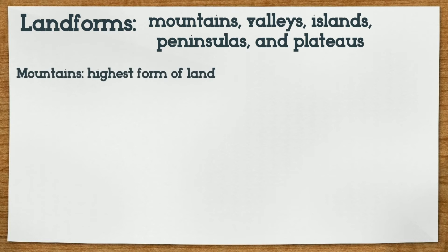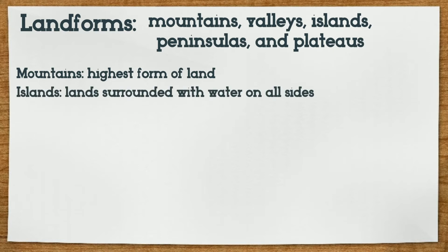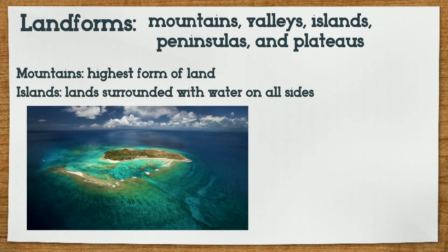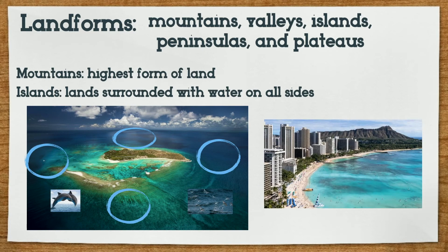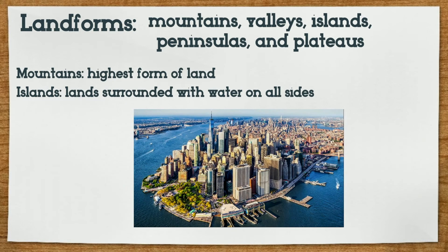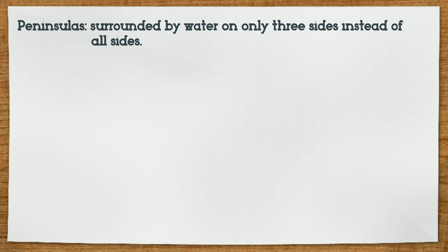Mountains are the ones you saw in Yosemite. They are the highest form of land. Islands are the ones you saw in Palawan. They are lands surrounded with water on all sides. These are usually alone in the ocean with only animals, but there are some that people have inhabited, such as islands in Hawaii. Did you know that Manhattan in New York is an island? It is surrounded by the Hudson and the East River.